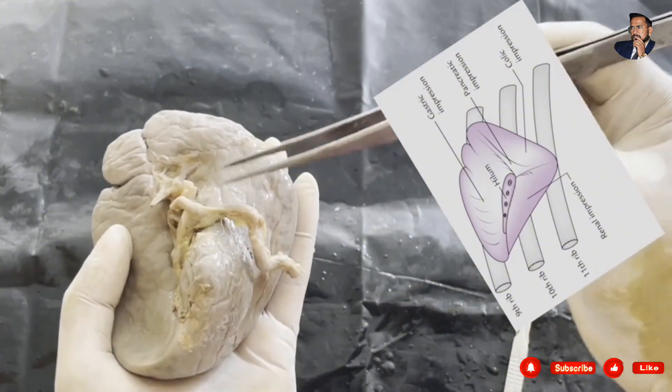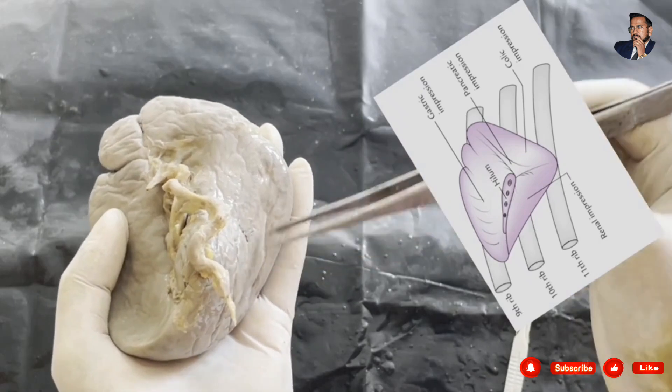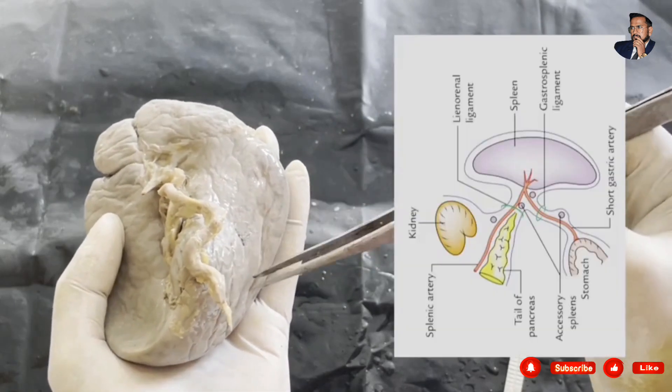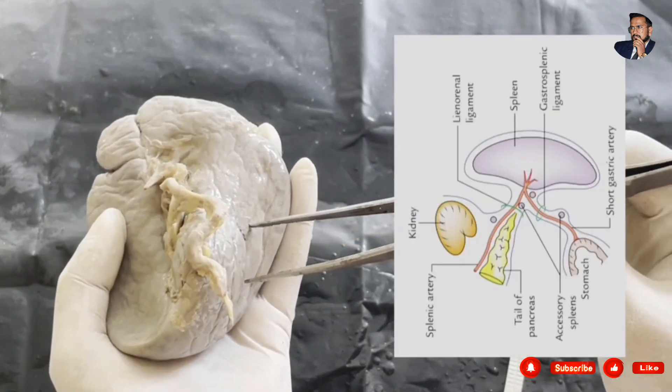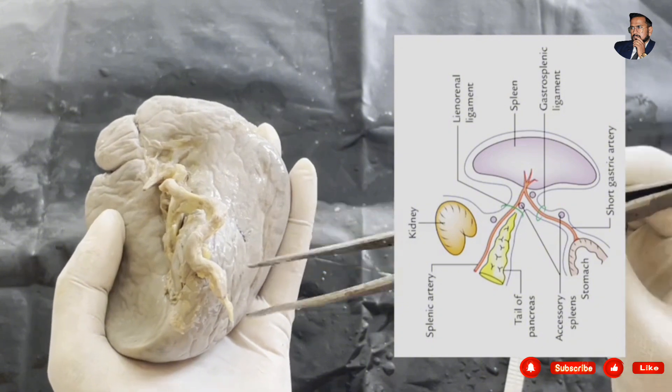This is inferior border and this is intermediate border. Between the inferior and intermediate border it is related with left kidney with the lieno-renal ligament, the renal impression.